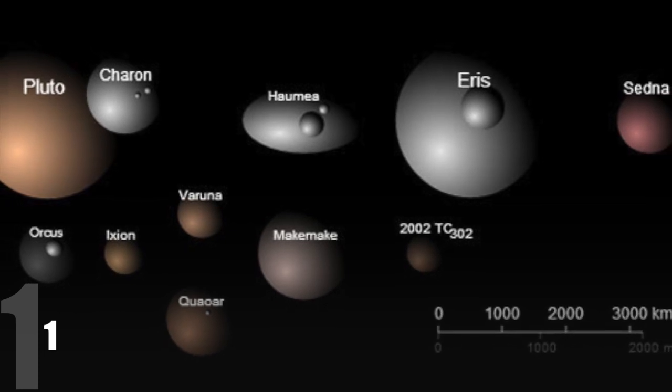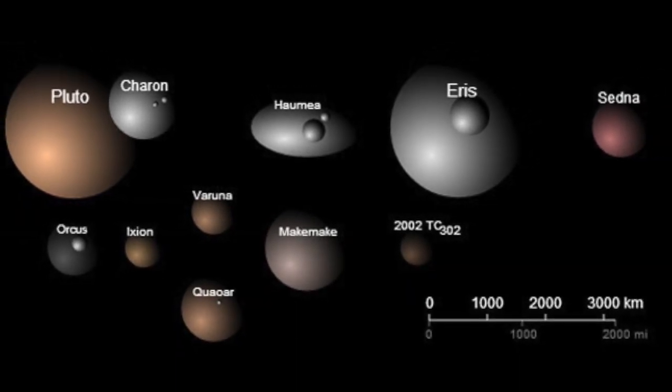Due to Pluto's demotion as a planet, there is a new category of small planets known as Plutoids.